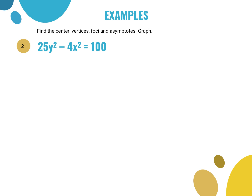For the next example, I divide everything by 100 and get y²/4 − x²/25 = 1. Since y² is first, this is a vertical hyperbola.